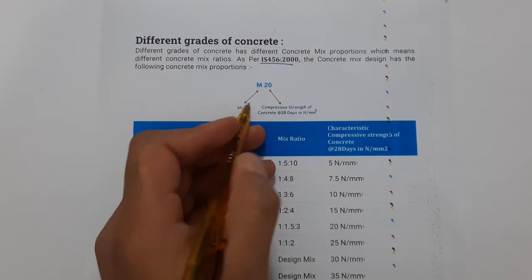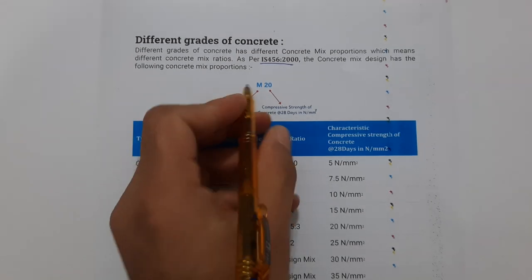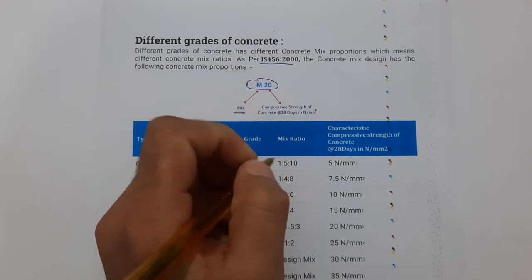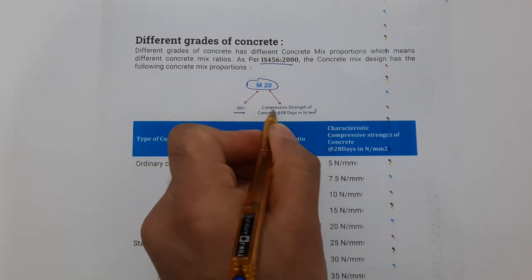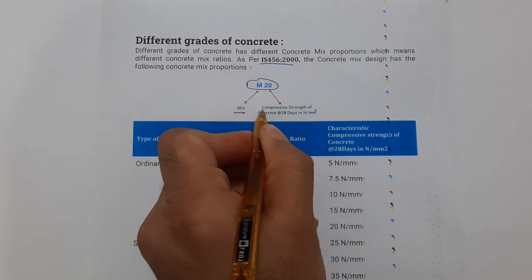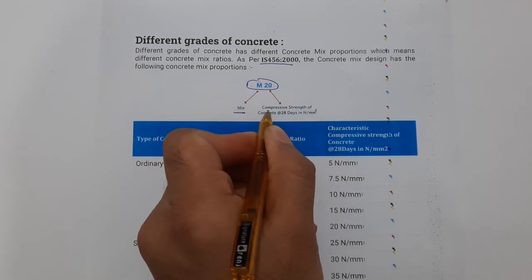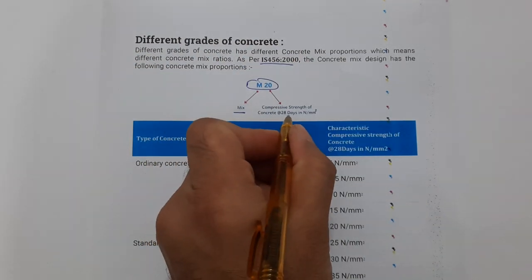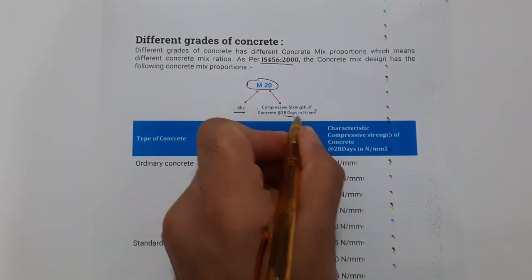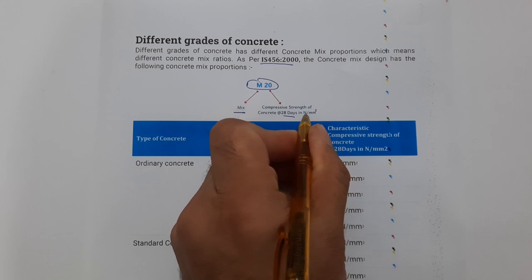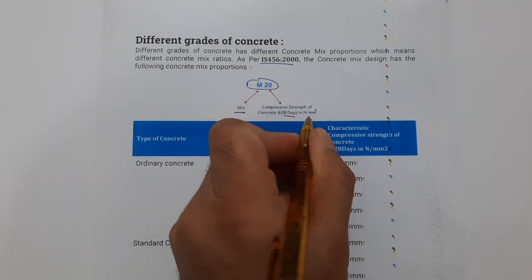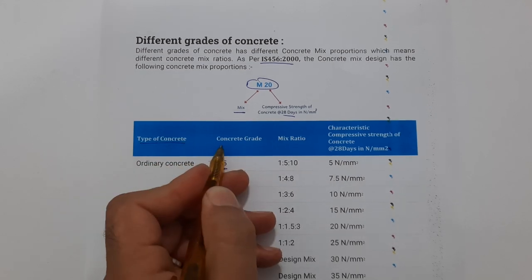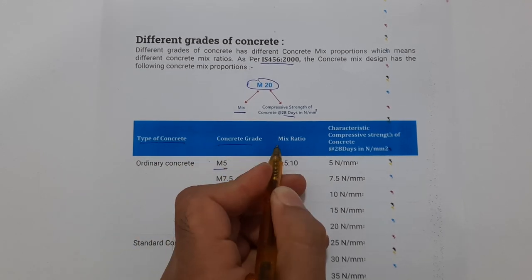Now what is M, and what is the number? For example, taking M20: M stands for mix, and 20 is the compressive strength of concrete, or the characteristic compressive strength of concrete after 28 days, in Newton per mm square. So now we have the types of concrete, concrete grades, mix ratios, and characteristic compressive strength of concrete at 28 days in Newton per mm square.